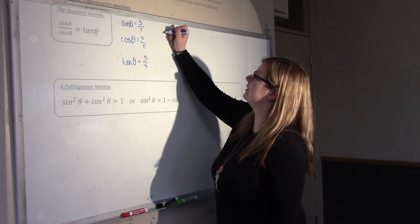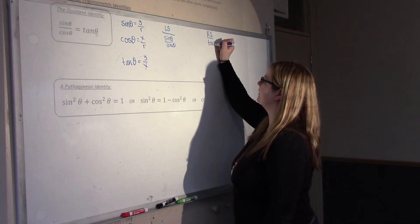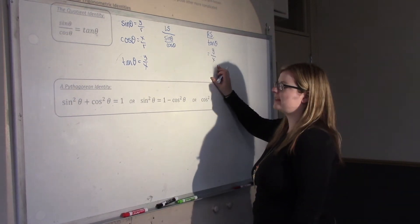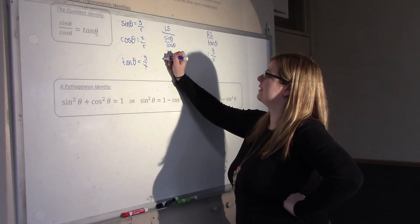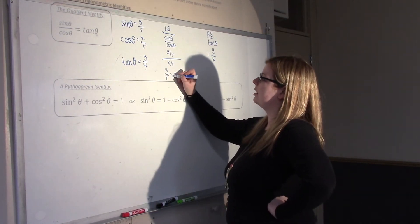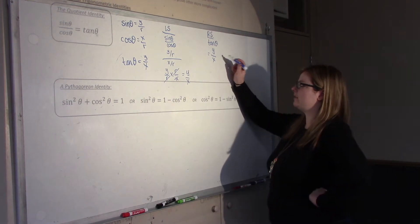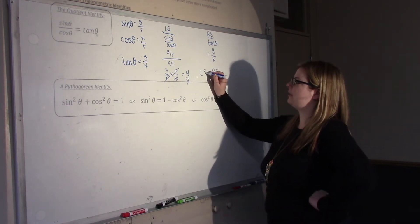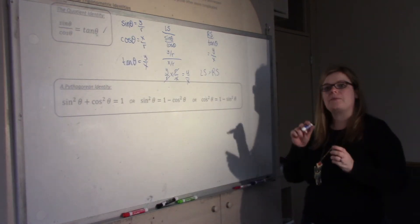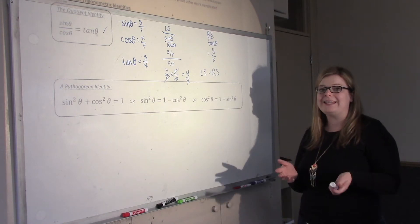Our left side is sin θ over cos θ, and our right side is tan θ. If we replace tan θ with y over x, I'm going to try to work the left side so that it's also y over x. Sin θ is y over r, divided by x over r. You're dividing fractions, so flip and multiply: you get y over r times r over x. The r's cancel, and you're left with y over x. Left side equals right side — proven! Any time you see tan θ, you can replace it with sin θ over cos θ, and vice versa.